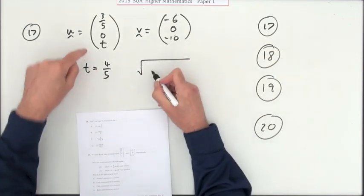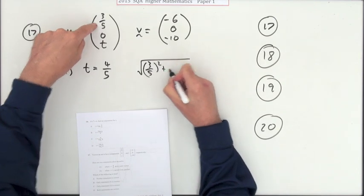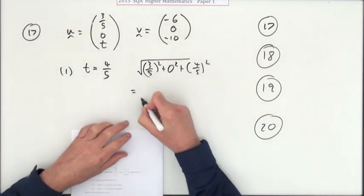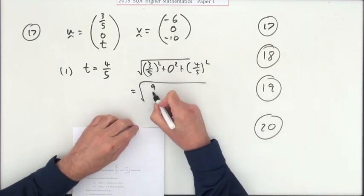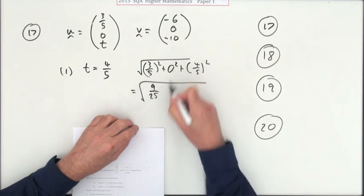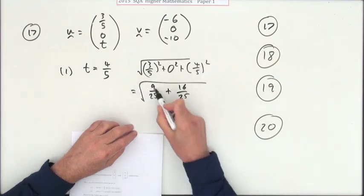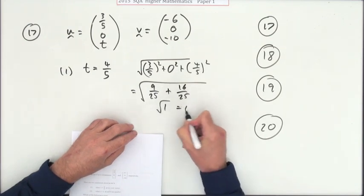So the magnitude would be the square root of three-fifths squared, zero squared, and four-fifths squared. When you square a fraction, you square the top and square the bottom. That's nine twenty-fifths, nothing there, and that's 16 twenty-fifths. Well that's 25 over 25, which is the square root of one, which is one. So yes, it is a unit vector.